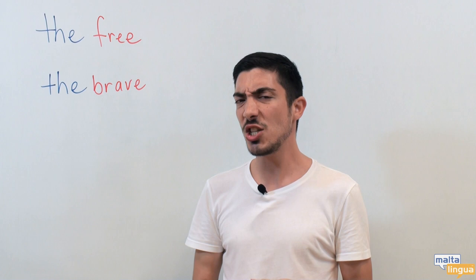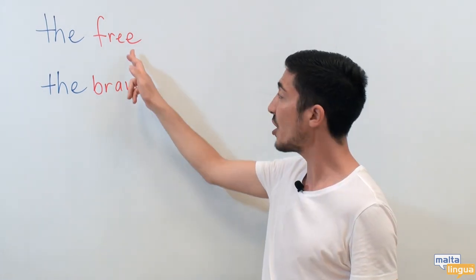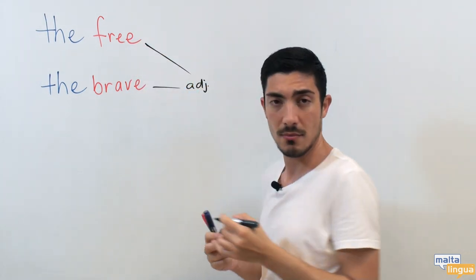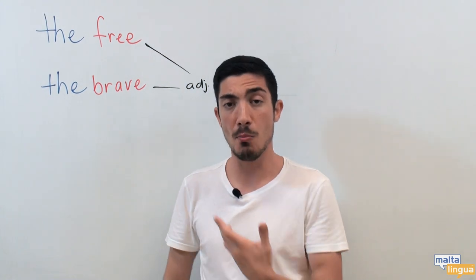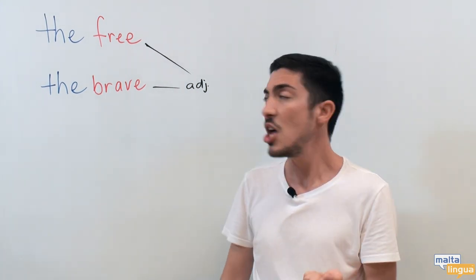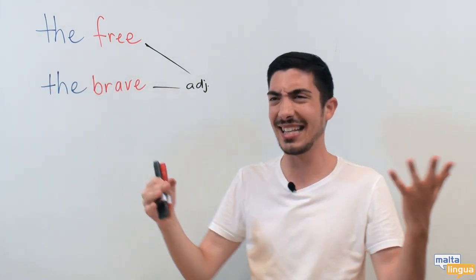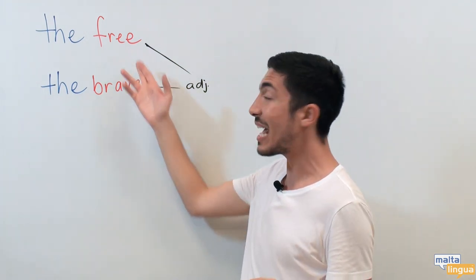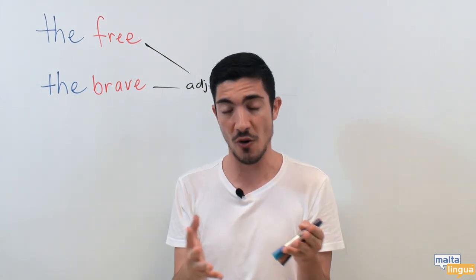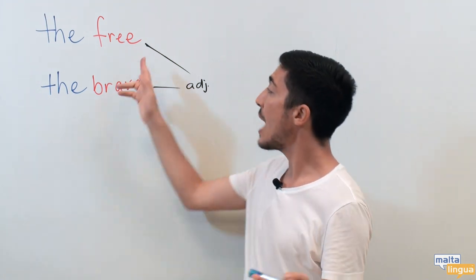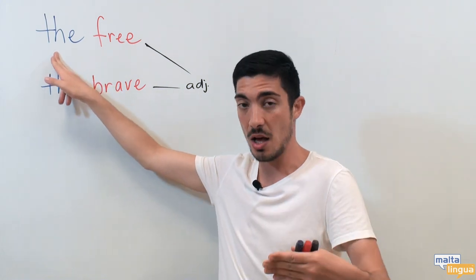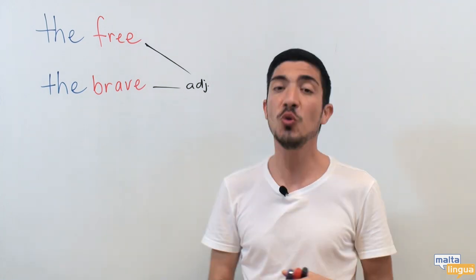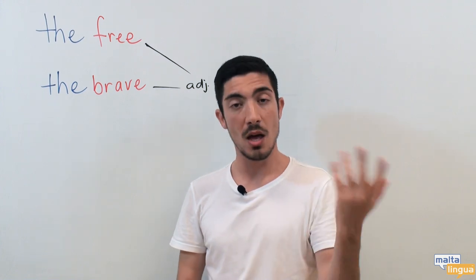Now, you might be wondering, why do I not use a noun here? Because the words free and brave are both, in fact, adjectives normally. For example, free people or brave people — they are usually followed by a noun. So, why am I putting an article before them and suddenly they act like nouns? In English we can actually use words like free and brave to refer to groups of people. By putting the definite article, the, before the adjective, it changes the form of the adjective to a noun. So, the free, the brave.